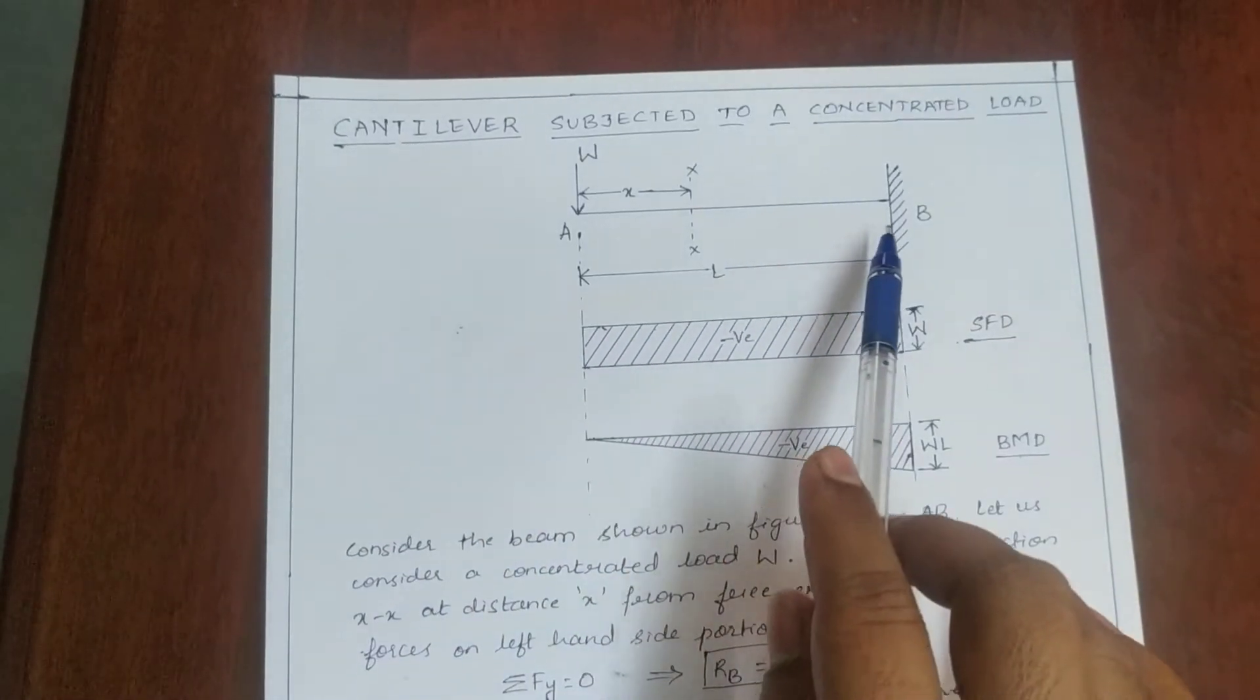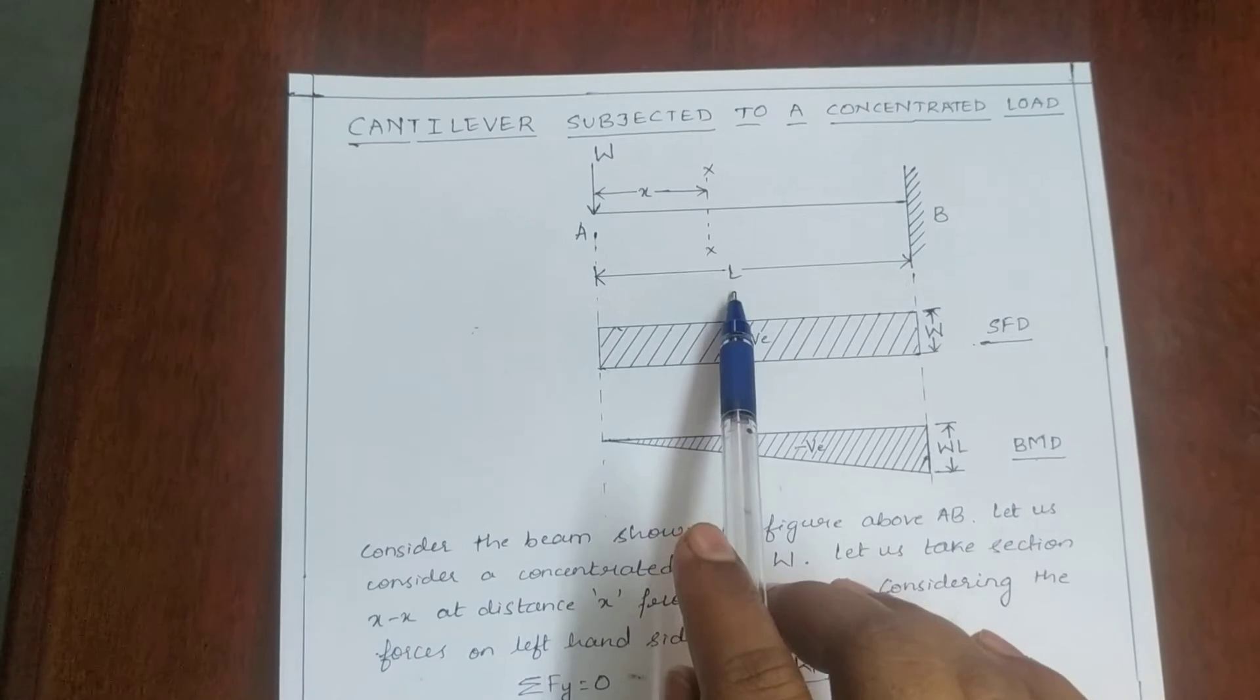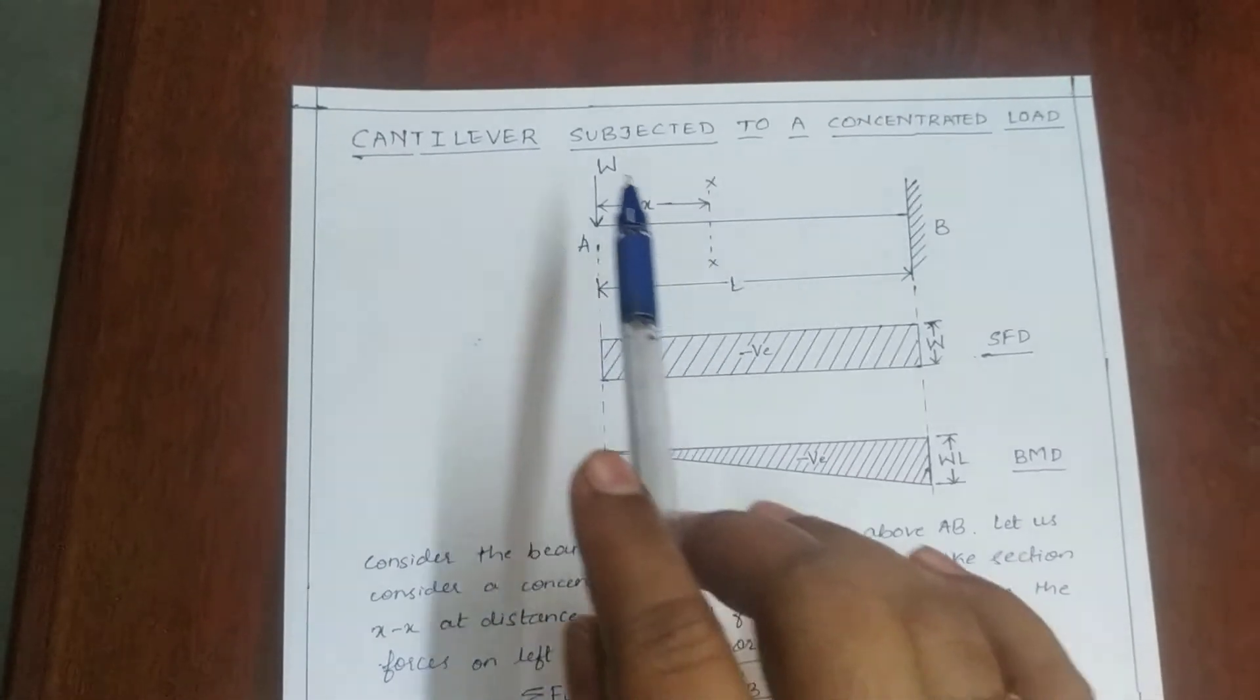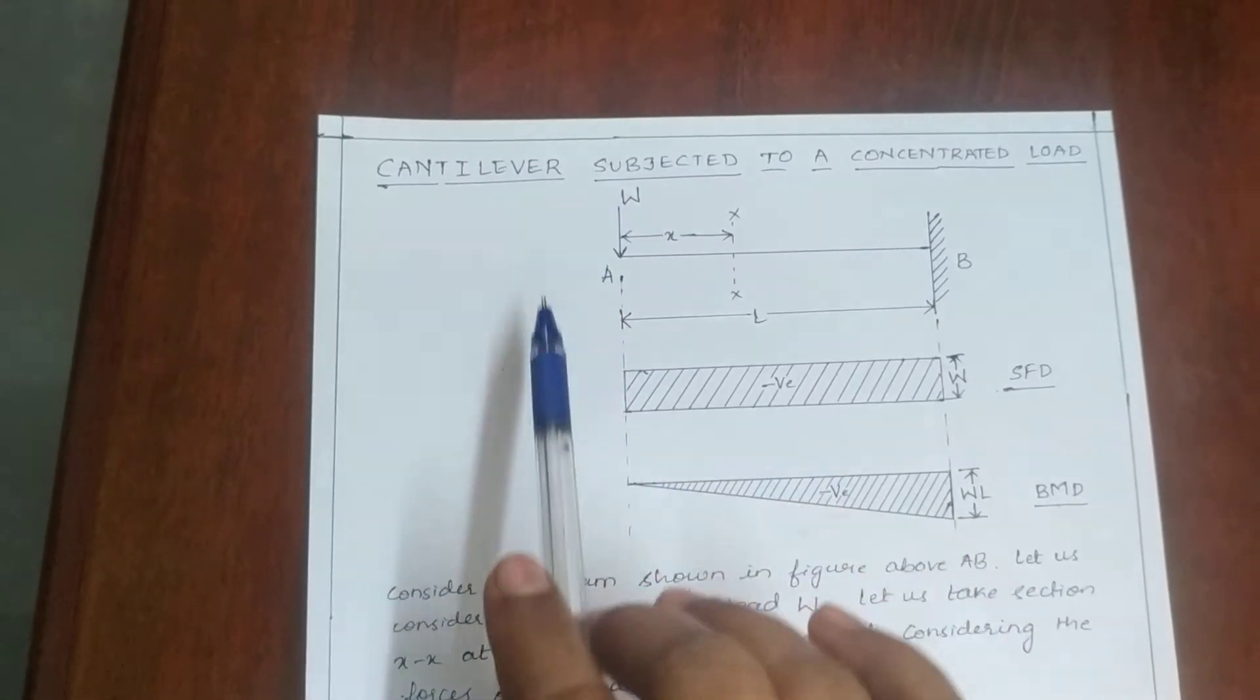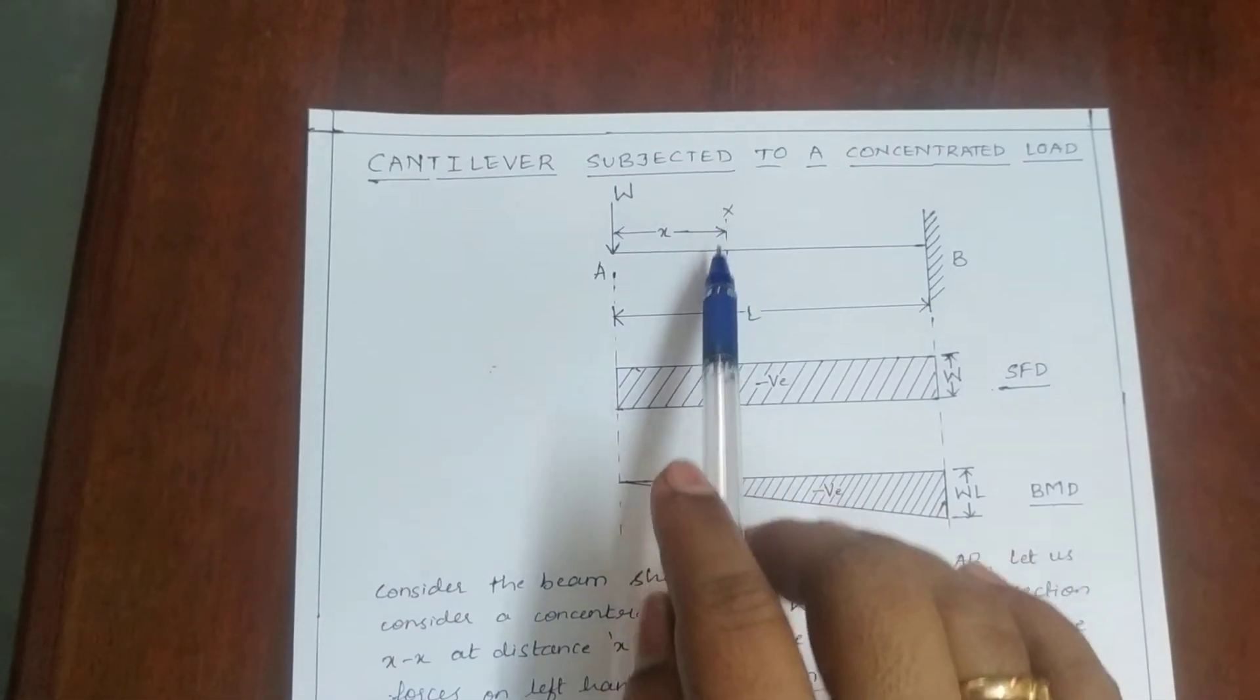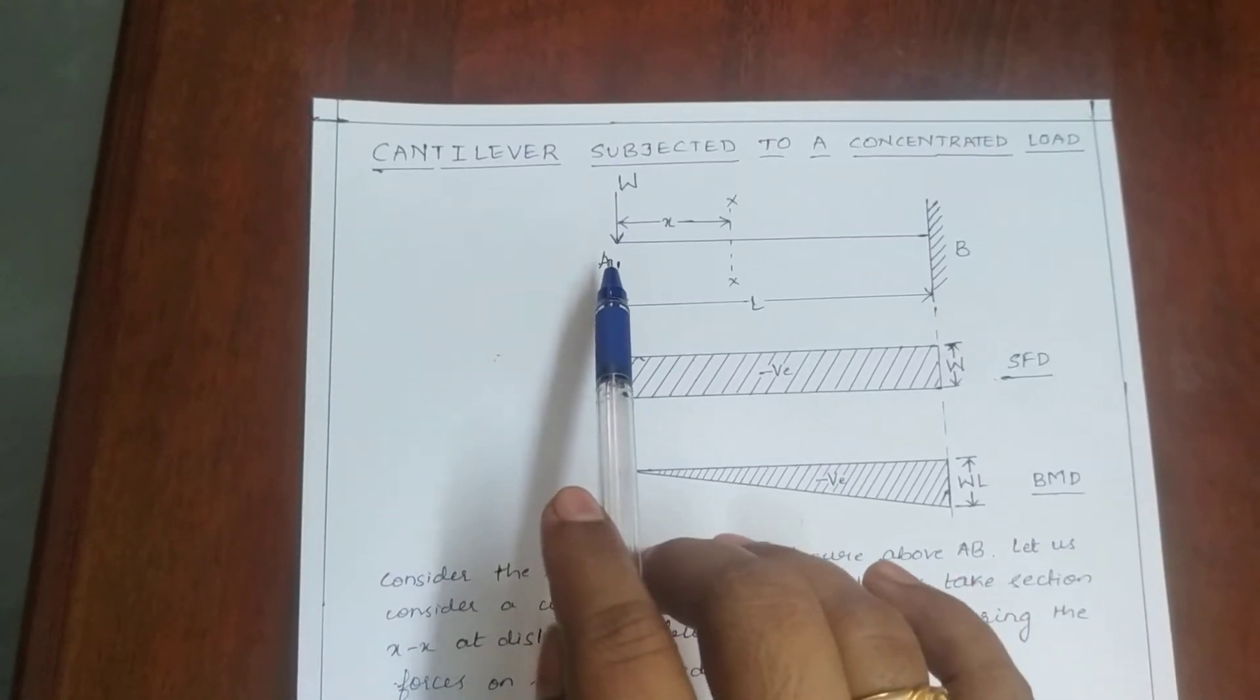Let us consider a cantilever beam AB having span of L and let the concentrated load be W. And let us consider a section XX at a distance of X from the free end that is A.